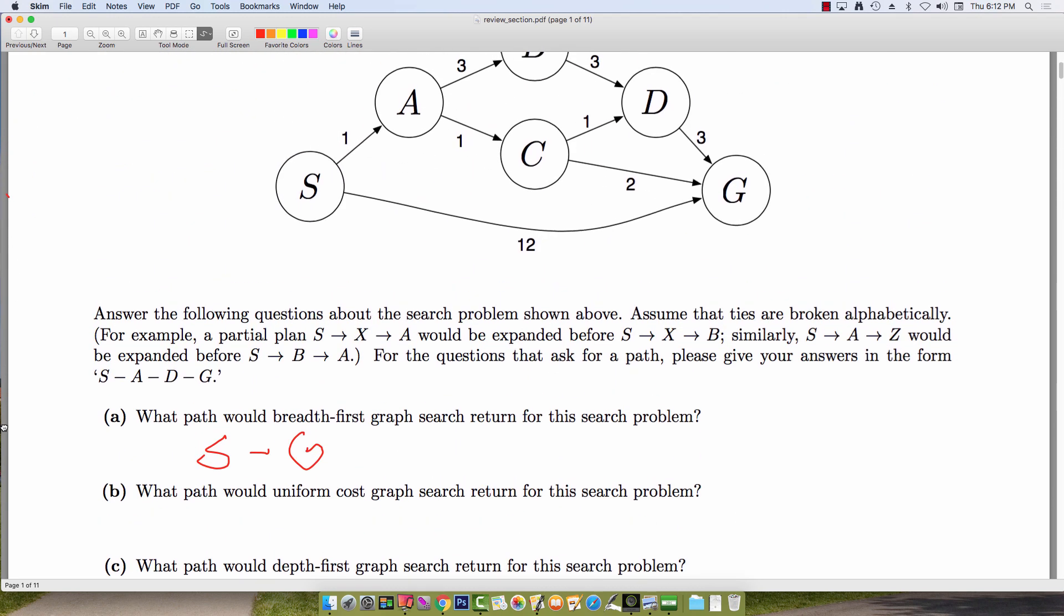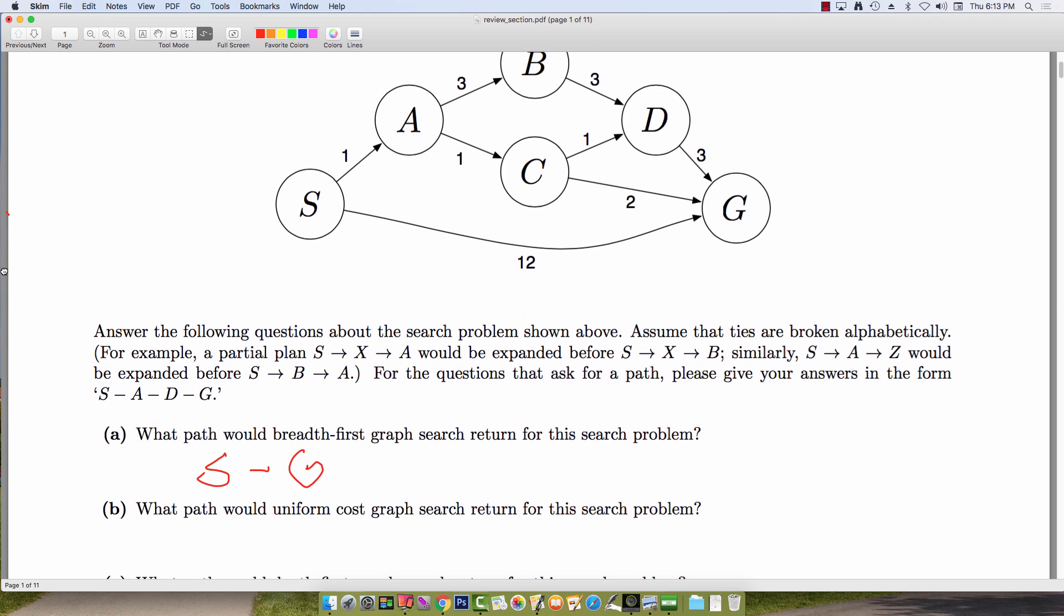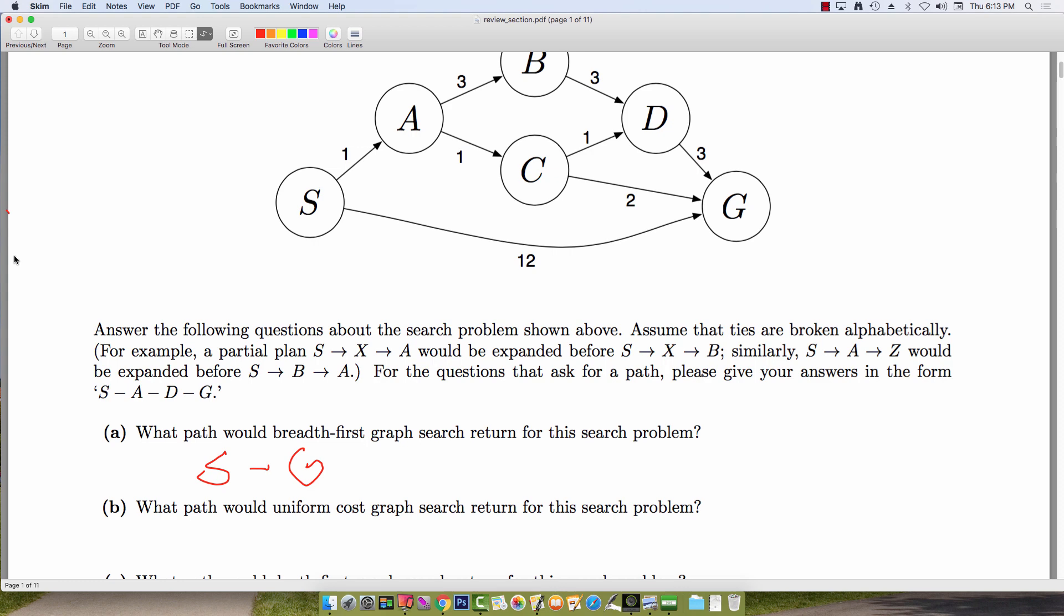So for the next part of this problem, we'll be using uniform cost search to find the path. So in addition to storing the previous node that got me to the node I'm looking at when I'm expanding these children, I'm also going to store the total path cost that I incurred to get to that node.